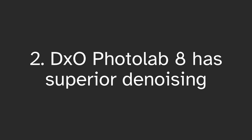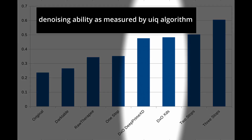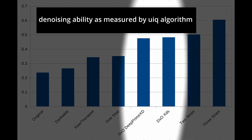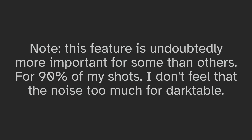DxO has superior denoising. Without a doubt, DxO Photolab has superior denoising. That's because it has a machine learning noise reduction algorithm, and even its non-machine learning algorithm is superior to Darktable. You can still get good results in Darktable on noisy images, but usually that means using masks.